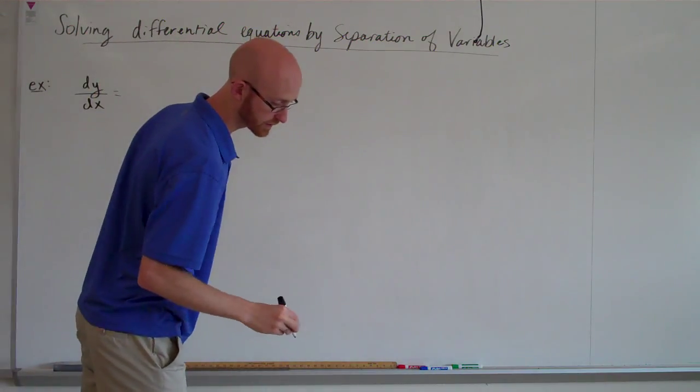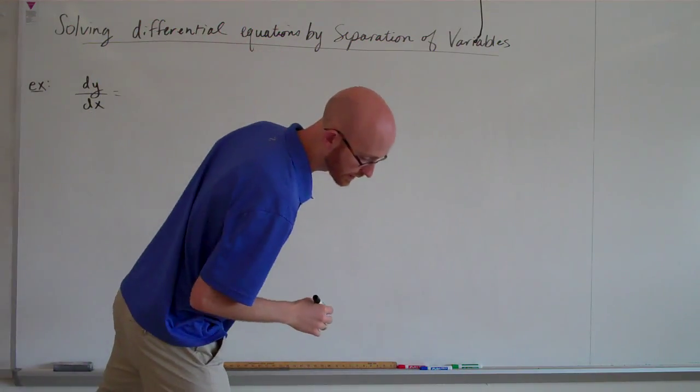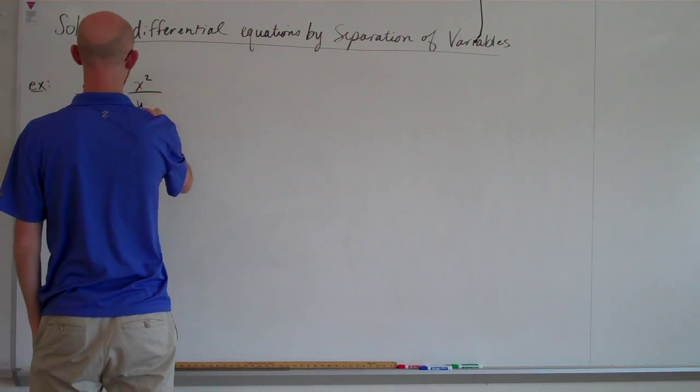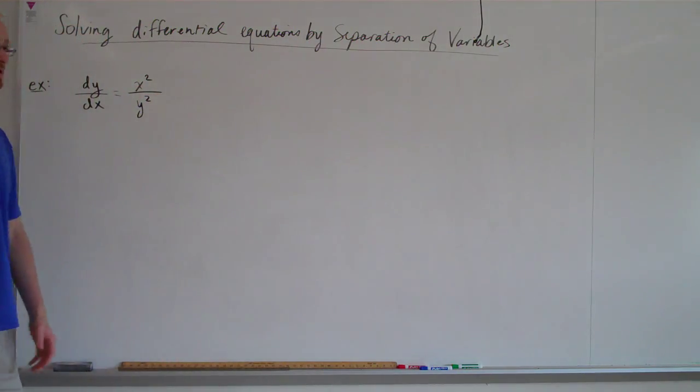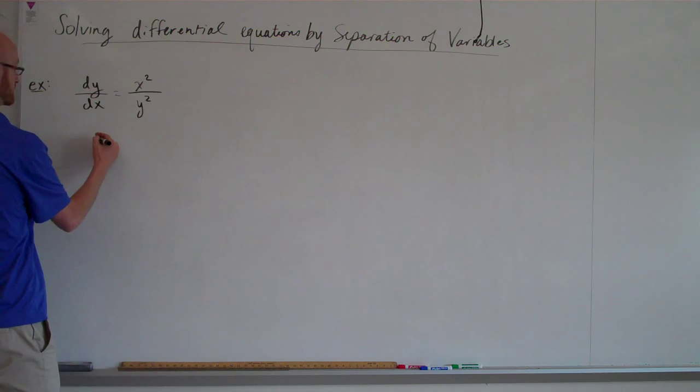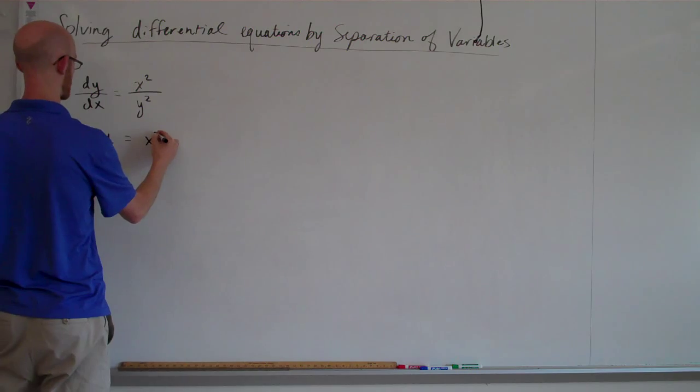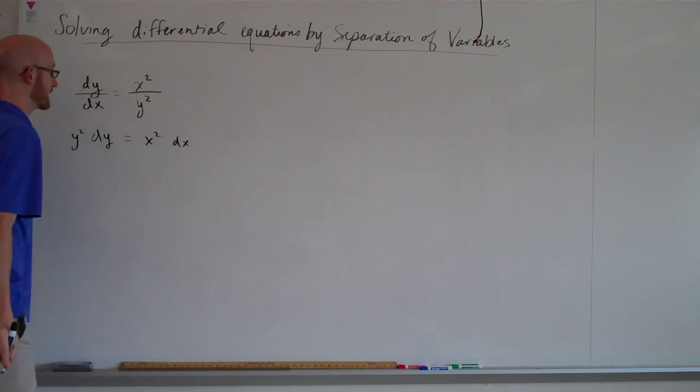Say you are given dy dx equals x squared over y squared. And what we're going to do is separate the two variables. So we will multiply to get this equation: y squared dy equals x squared dx.